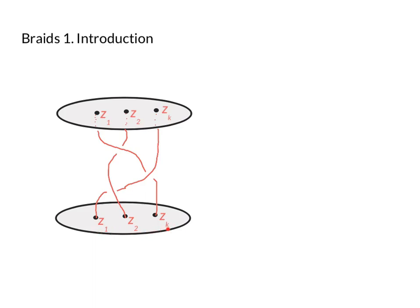And we've got the same K points up at the top, and the braid is the red thing in between, the collection of, in this case, three strands that connect the bottom points to the top points.